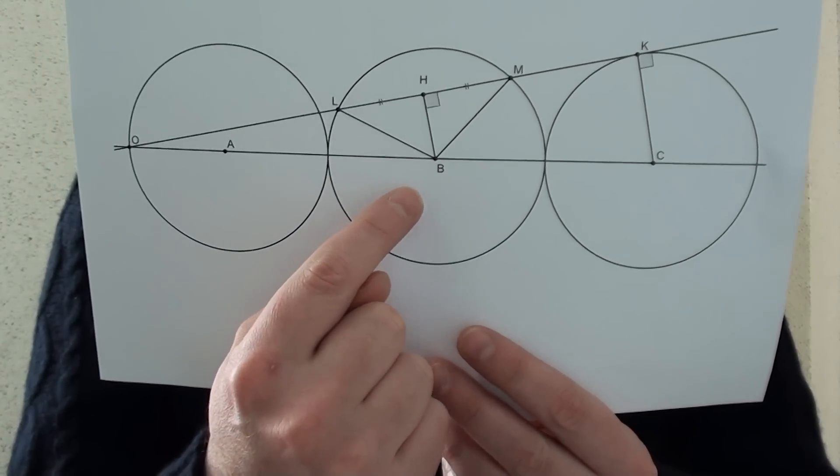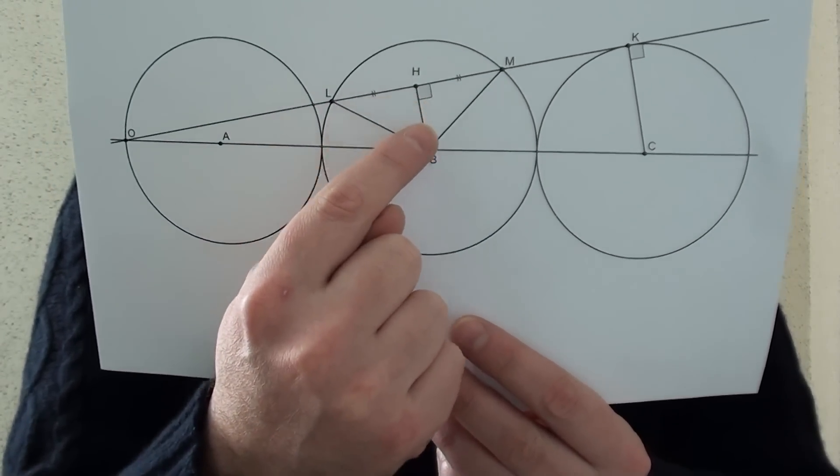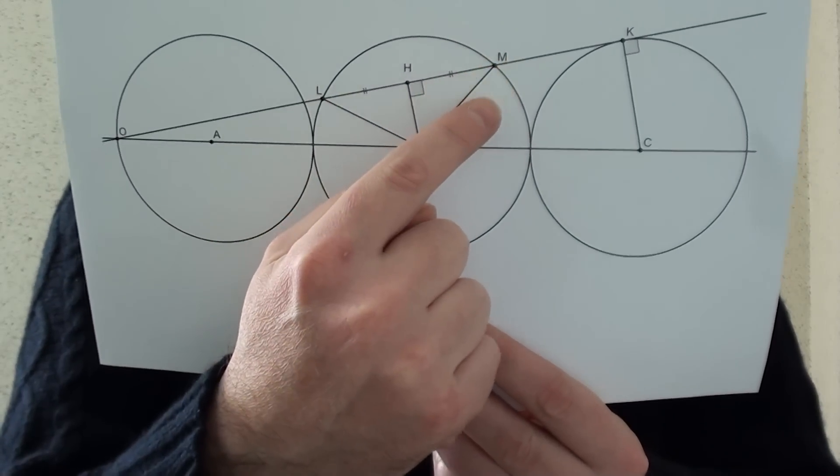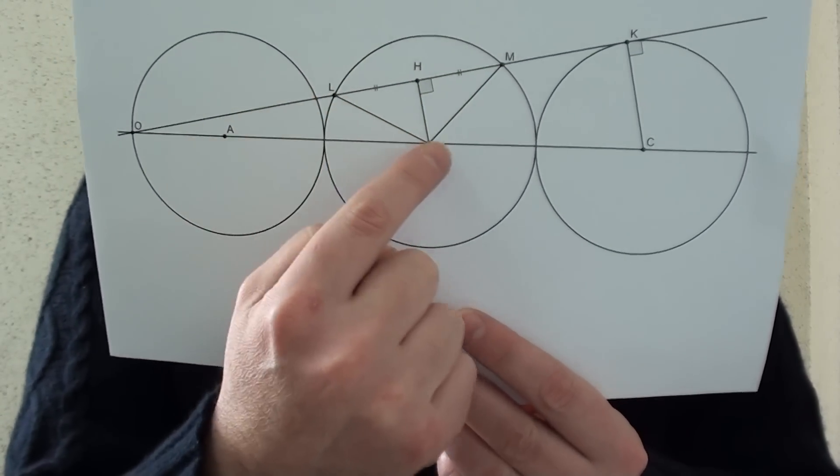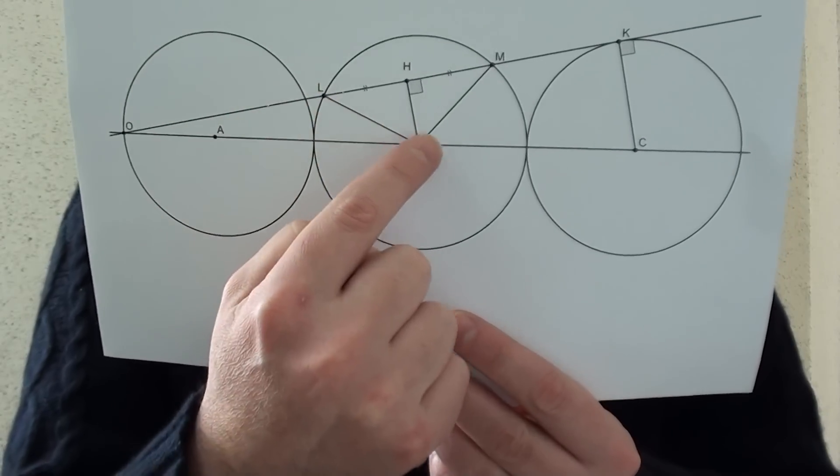Also, we can draw the line BH. BLM being an isosceles triangle because those two have a length of 5.